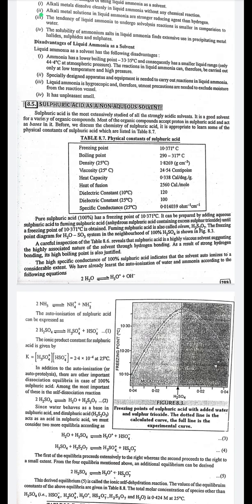Pure 100% sulfuric acid has a freezing point of 10.371°C and can be prepared by adding aqueous sulfuric acid to fuming sulfuric acid (oleum, H₂S₂O₇) until a freezing point of 10.371°C is obtained. Sulfuric acid is a highly viscous solvent due to strong hydrogen bonding, which also justifies its high boiling point. The high specific conductance of 100% sulfuric acid indicates that the solvent auto-ionizes to a considerable extent.